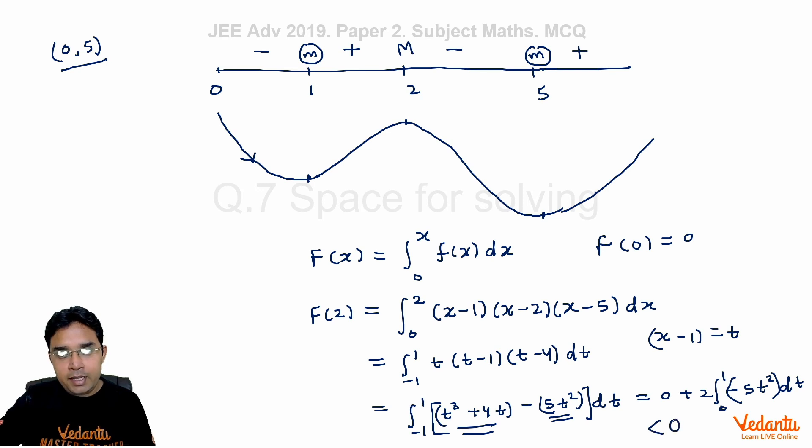Now this -5t² is a negative value and we are integrating from 0 to 1, so this integral has to be negative. We are not finding this value, but we are directly saying that it will be negative, which means as I was saying that from 0 to 1 it was already negative, 1 to 2 also it will be negative.